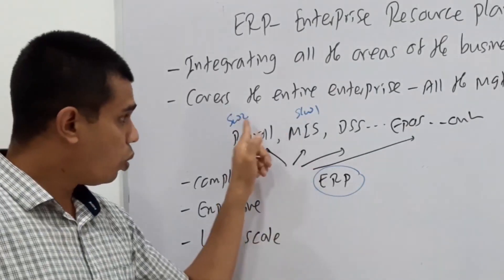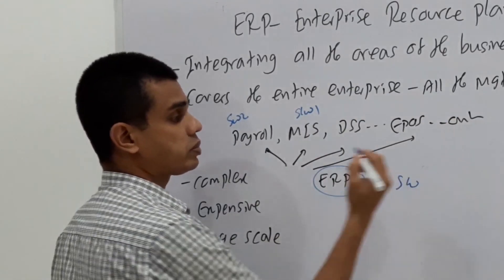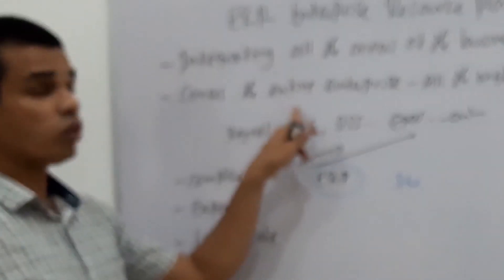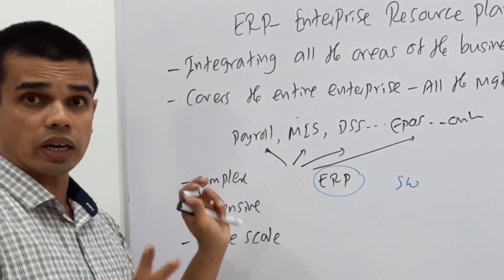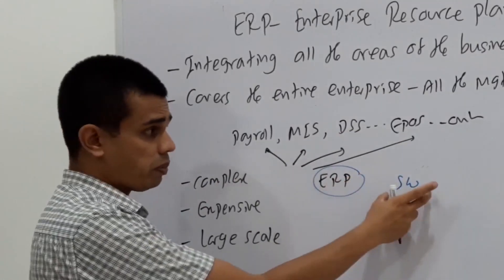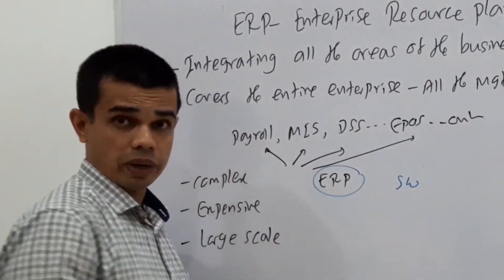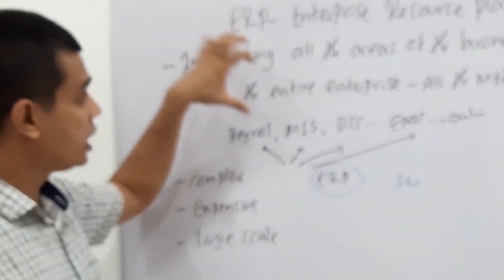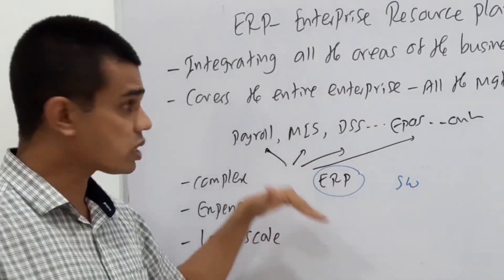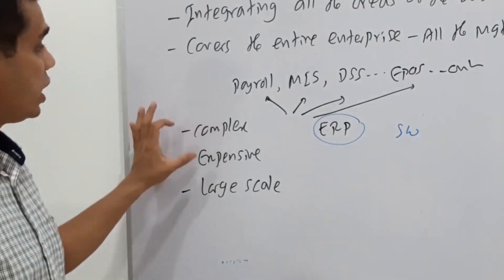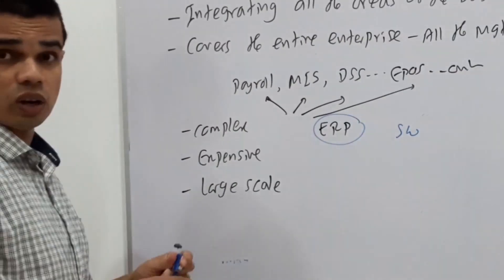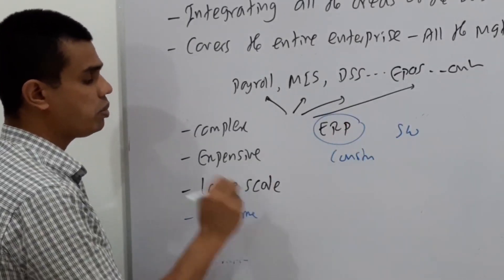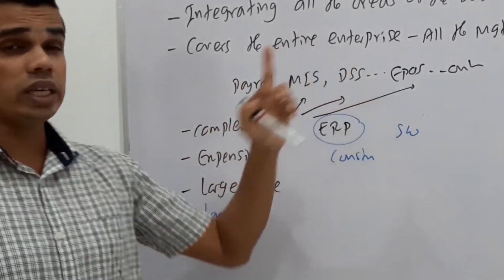But when it comes to ERP, all of them are made by a single software company. Then what about the compatibility? The data exchanging between these packages, payroll data given to MIS - they are highly transparent, highly efficient. Why? All of them are made by one company. So they are completely compatible. That's the benefit of having ERP. All these softwares are nicely integrated. They are connecting their data flow. In order to construct or make the ERP, it takes long time to finish one such ERP because it should cover all the areas of the organization.